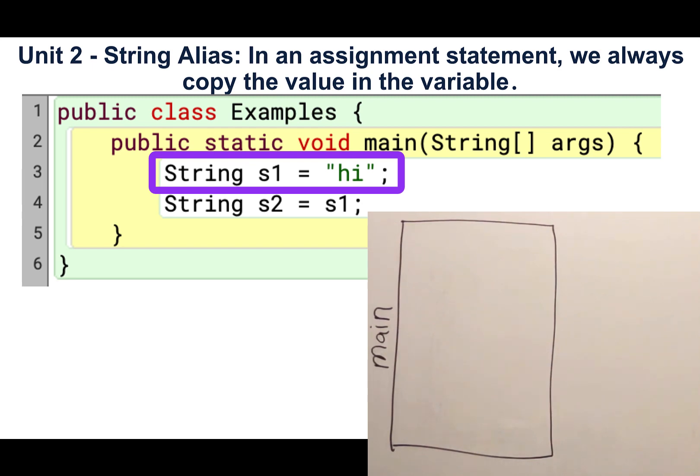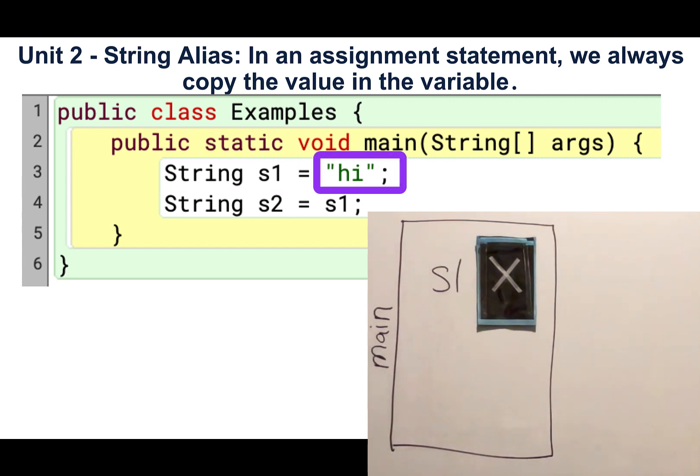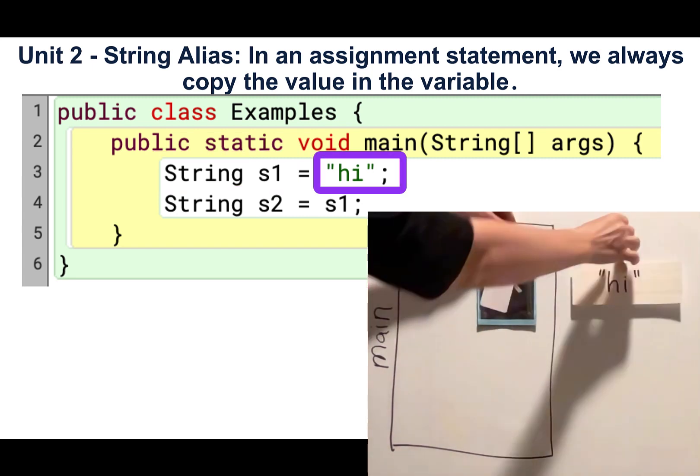I would read line 3 as string s1 gets hi. I read the equal sign as gets because the equal sign doesn't behave like it does in math. So on line 3, I created a variable named s1 of type string. That means it's a variable that can reference a string, and the value I assigned it is a reference to the string hi.